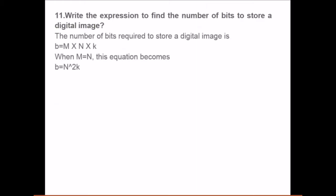Write the expression to find number of bits to store a digital image. This is M into N into K. If the radiometric resolution is K, we just multiply M into N into K. M is the row and N is the column and K are the number of bits. If M and N are required as square of K.